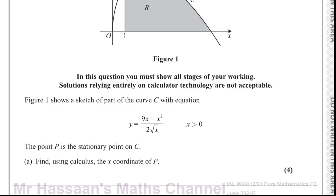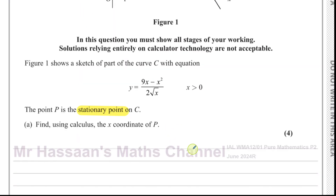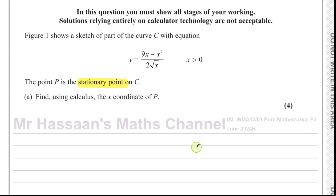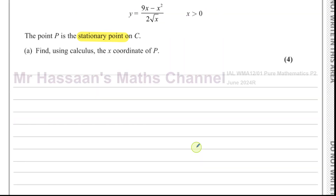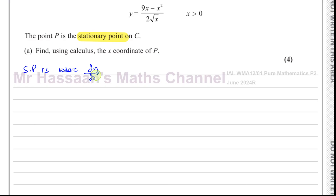The stationary point is a point which has zero gradient — it could be a turning point, a maximum or minimum, or a point of inflection. The key point is that it's a place where the gradient is equal to zero. So to find the gradient of the curve, we're going to use the first derivative. The stationary point is where dy/dx is equal to zero. dy/dx represents the gradient.